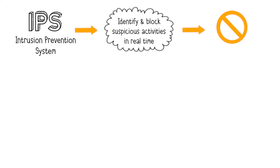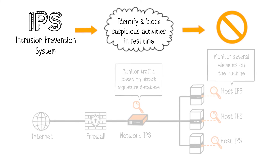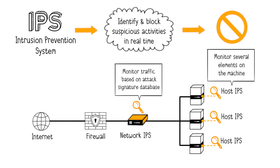Moreover, IPS dynamically enforces security policies based on real-time analysis. There are two main types of IPS. The role of a network IPS is to detect attacks on a network based on an attack signature database, similar to antivirus software. When it recognizes a signature, it can take measures to block the attack before it starts by blocking the malicious flow. Host IPS monitors the security state of host machines by monitoring various elements such as processes, drivers, and DLLs. If a suspicious process is detected, host IPS can stop it to end the attack.